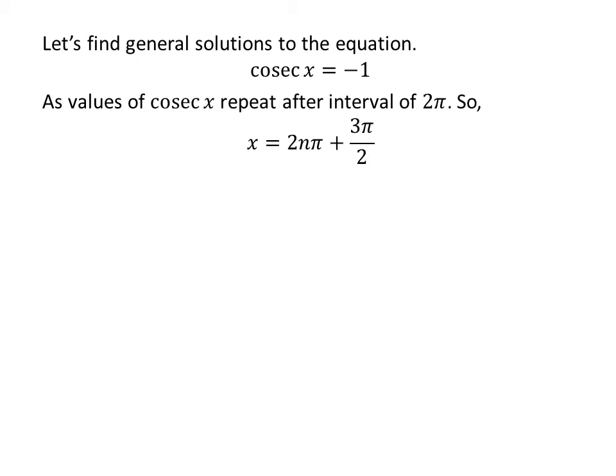Let us find the general solutions for the equation cosecant of x is equal to minus 1. As we know, the values of cosecant of x repeat after the interval of 2 times pi. So the general solution is 2 times n times pi plus 3 times pi upon 2, where n is an integer.